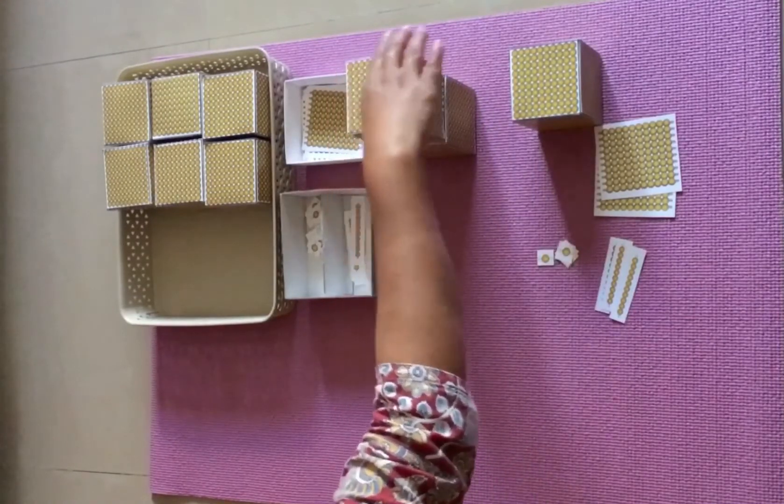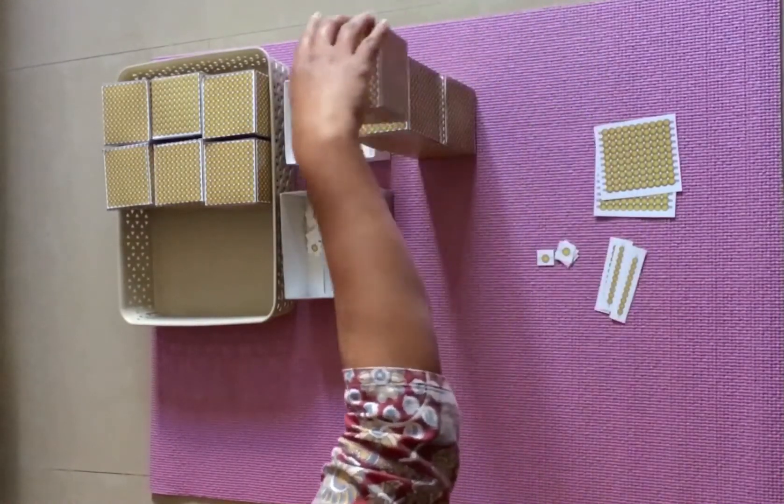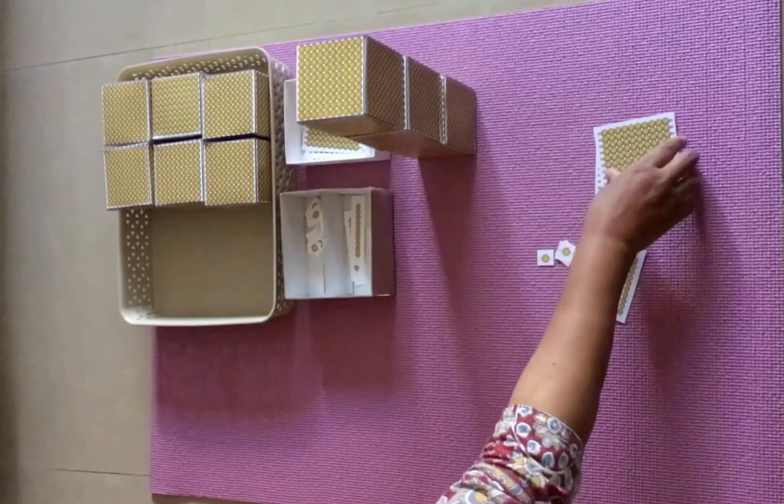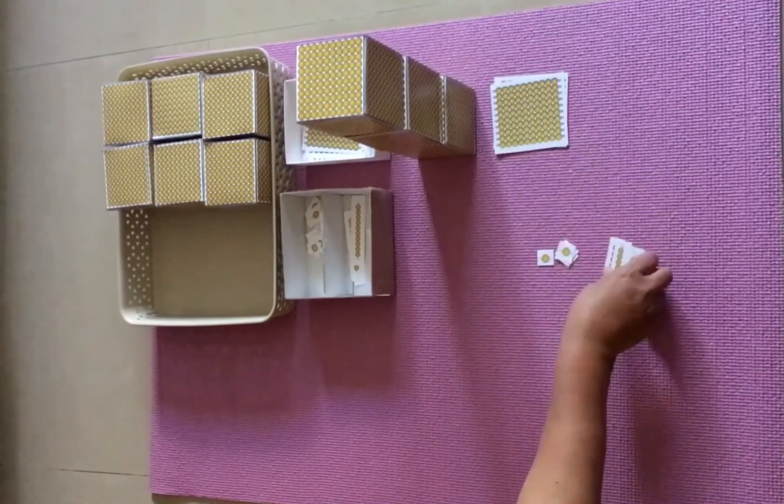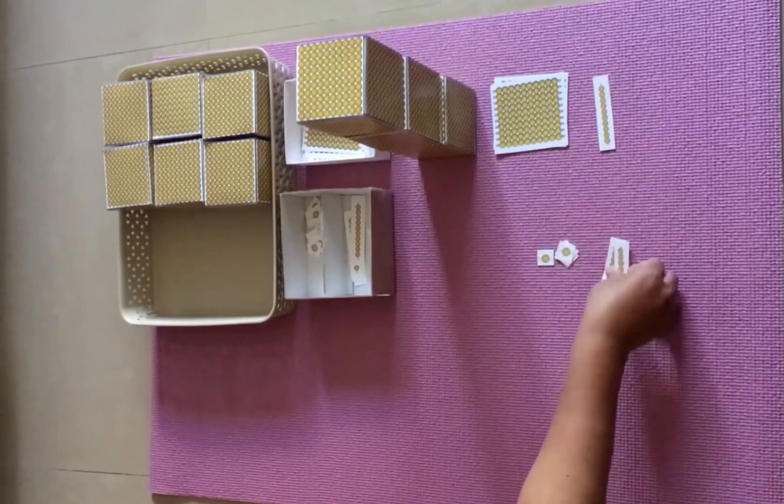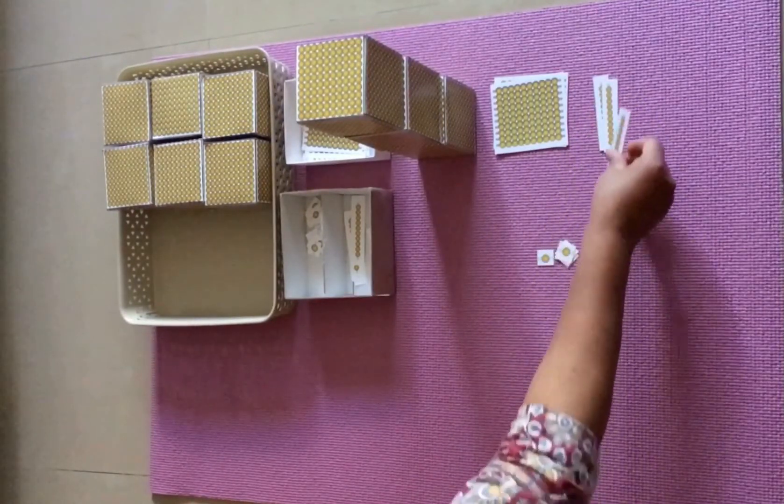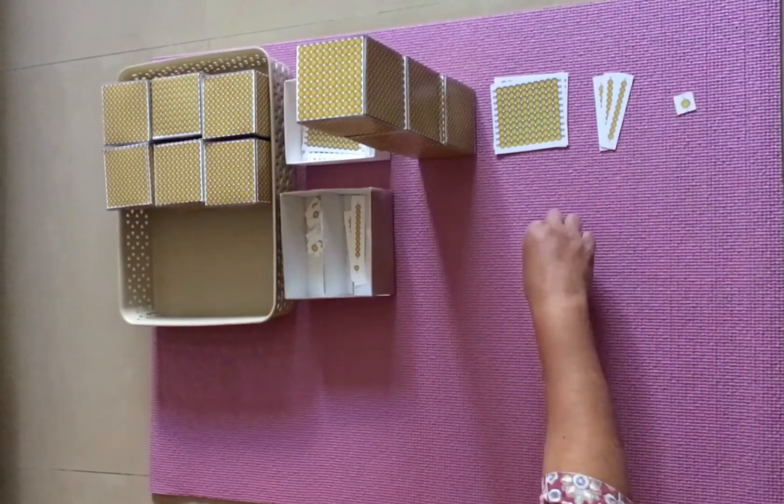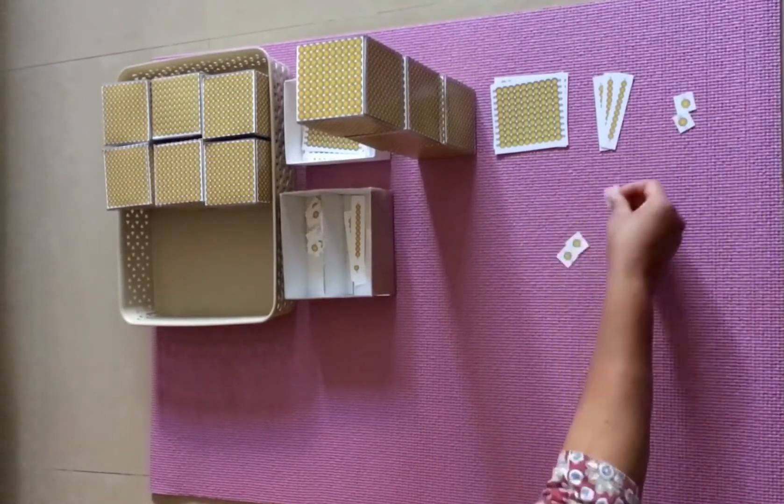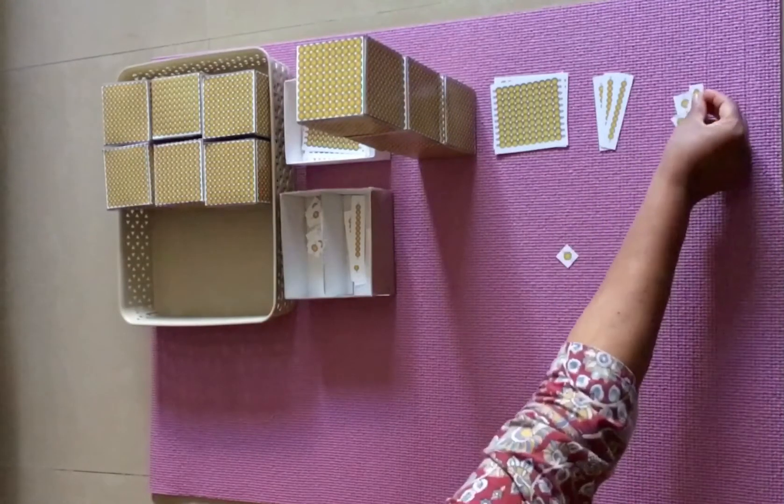Then we'll ask the child, can you tell me how much is here? Child may count and say 3 thousand, 2 hundreds, 3 tens, and 5 ones.